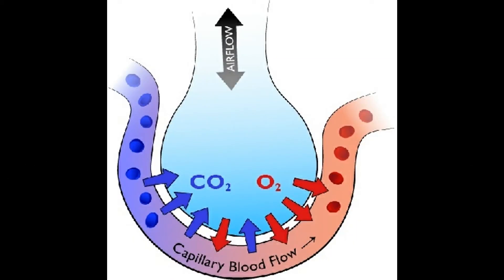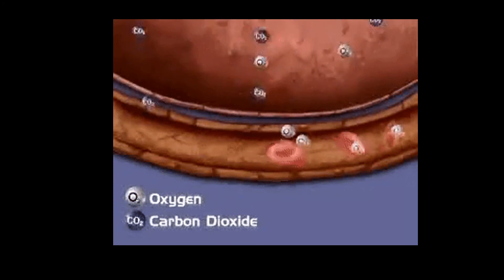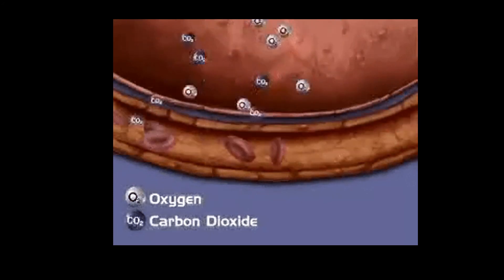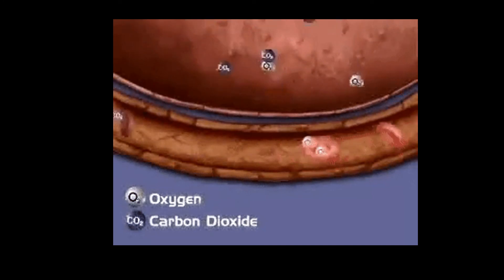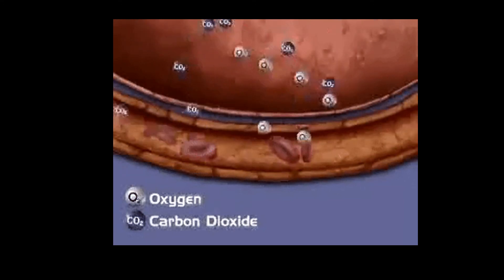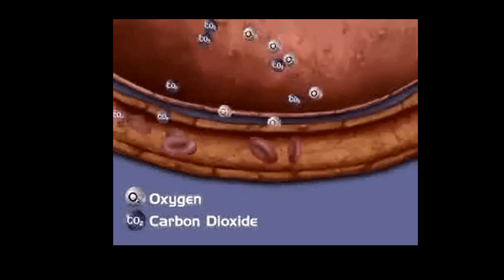Gas exchange takes place due to diffusion — this is the movement of a substance from an area of high concentration to an area of low concentration. At the site of the lungs, the alveoli have a high concentration of oxygen and a low concentration of carbon dioxide. The bloodstream is high in CO2 but low in oxygen. Therefore, oxygen will travel from a place of high concentration — the alveoli — to a place of low concentration — the bloodstream. This is known as moving along the concentration gradient. CO2 will follow the same principle as it moves from the bloodstream to the lungs.